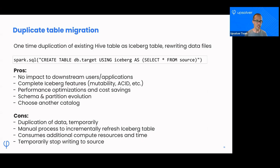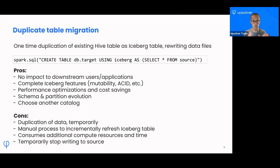The cons of this is we're duplicating data — you're going to have two copies of the data. It should be temporary. Once the Hive table has been migrated over and all the writers and readers have been migrated to the new Iceberg table, you can delete the Hive table and you won't have any duplicates anymore.